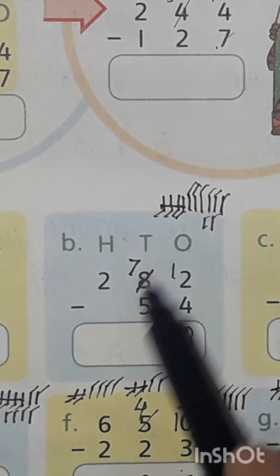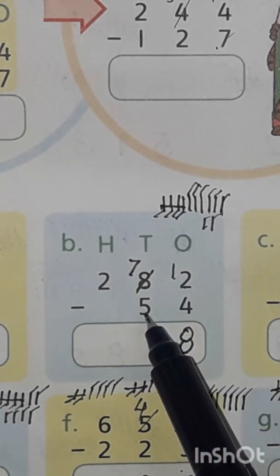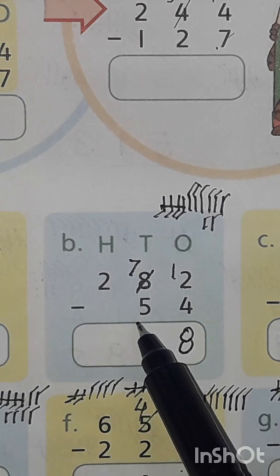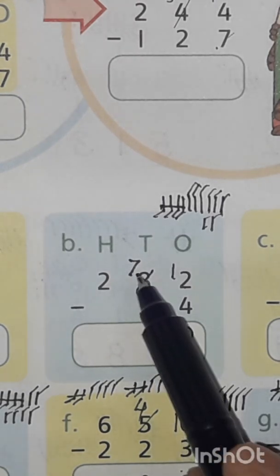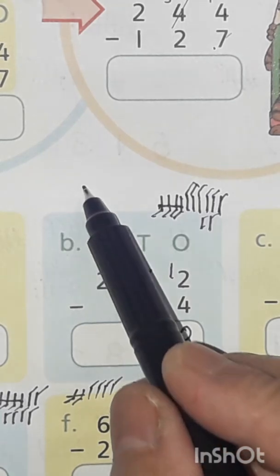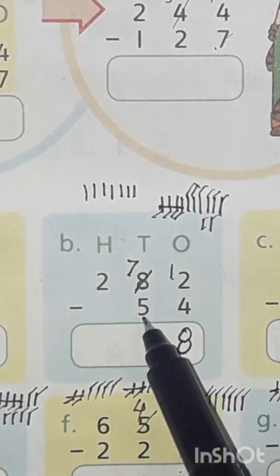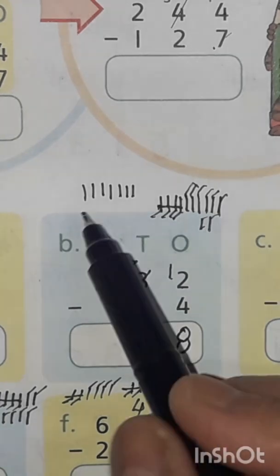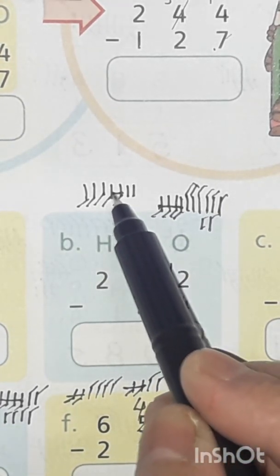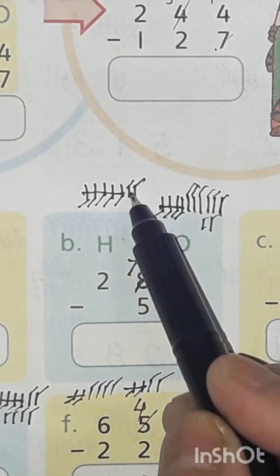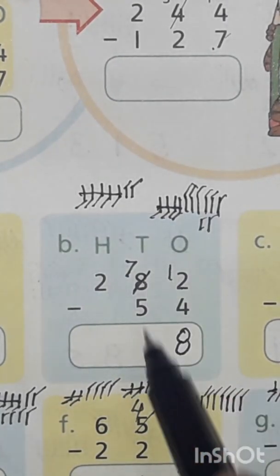10s: 7 is the bigger number, 5 is the smaller number. So we can subtract 5 from 7. Draw 7 lines: 1 through 7. Cut 5 lines: 1, 2, 3, 4, 5. 2 lines are left. Write 2 under 10s.